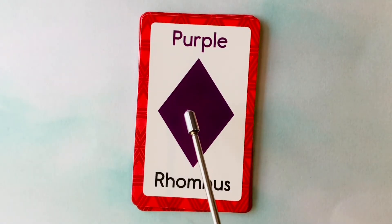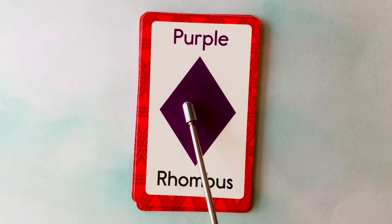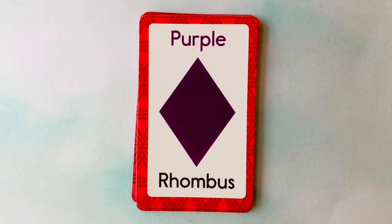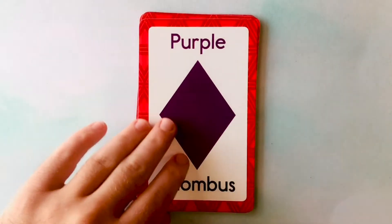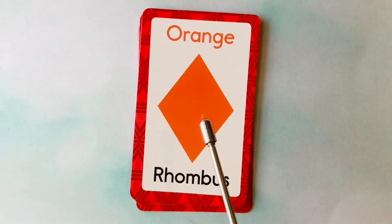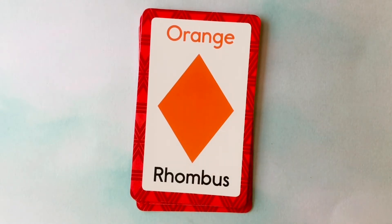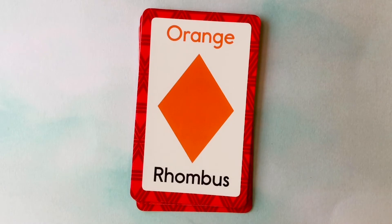This is a rhombus. What color is this rhombus? It's a purple rhombus. This is a purple rhombus. This is also a rhombus. What color is this rhombus? It's an orange rhombus. This is an orange rhombus.